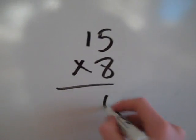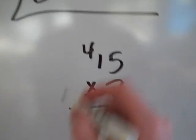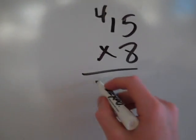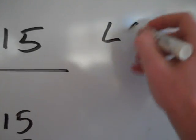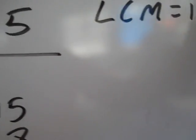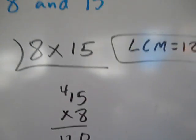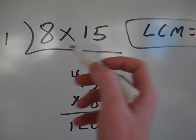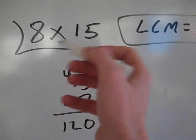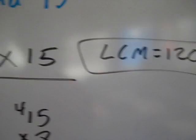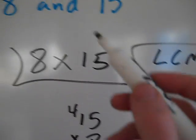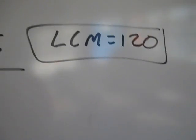You just multiply these two numbers together. So I'm going to do 15 times 8. 8 times 5 is 40. 8 times 1 is 8, plus 4 is 12. So the LCM equals 120. So again, in this case, 8 and 15 had no common factors other than 1, so you just multiply the two numbers together and they'll both multiply to give you 120.